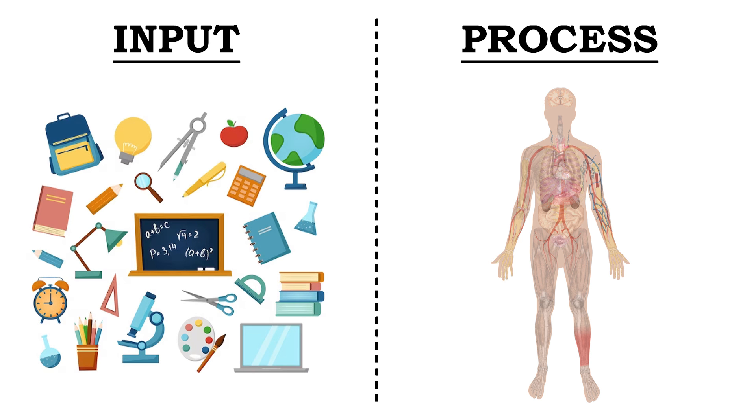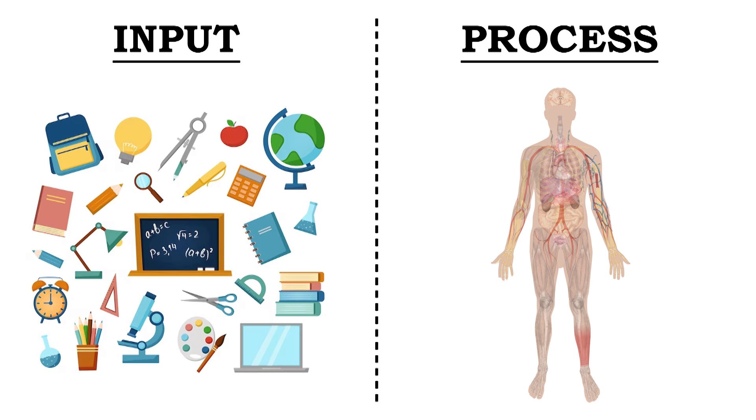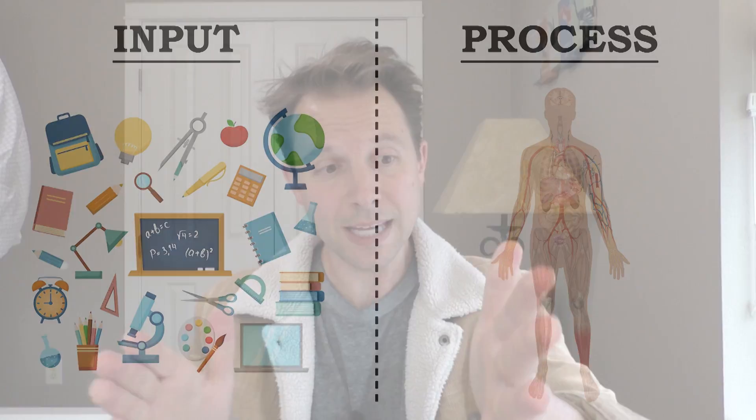But the inputs change. The things we put into the system that allow the process to function will necessarily change between different people. For instance, if I have a student who's blind, I cannot show them a picture or photograph — we need a different way to get information in. Or if I have a student with ADHD, they need higher-valence stimuli. But once that stimuli is in the system, the process does not change — it's the same process for all of us. The input needed to trigger that process changes, but the process itself remains.